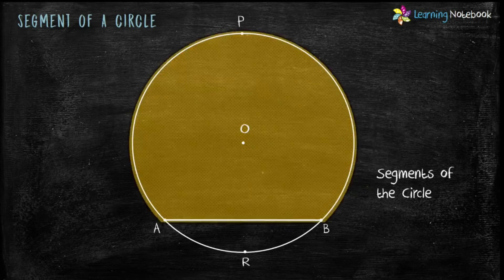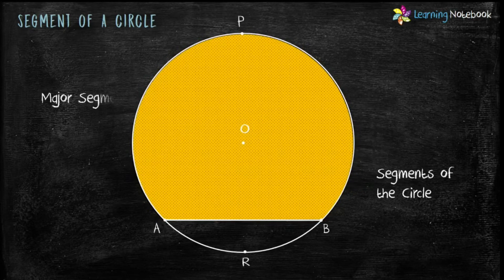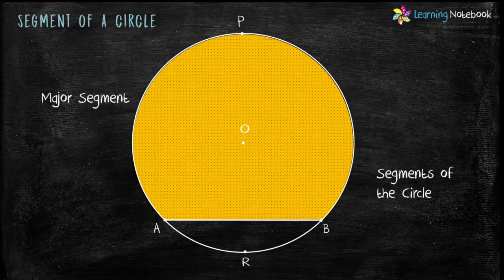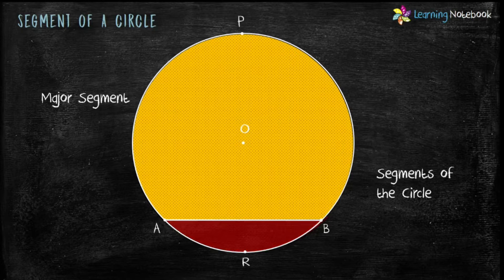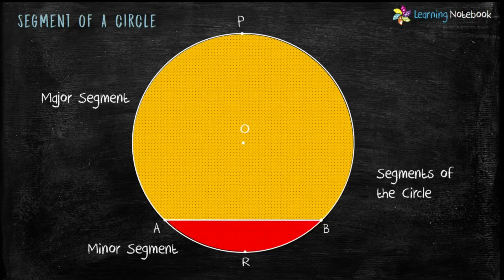APB and ARB. APB is the major segment and ARB is the minor segment of the circle.